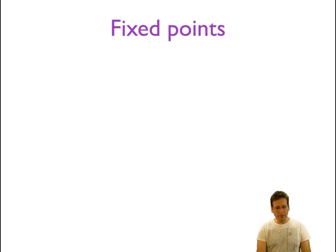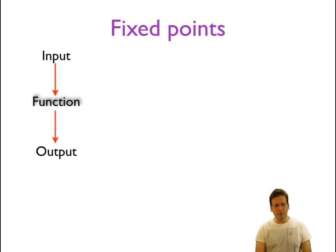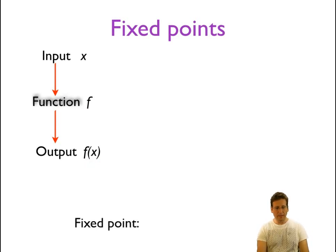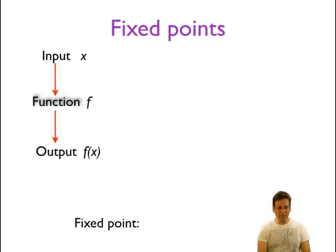There is a way to express this mathematically using the idea of a fixed point. A function takes an input and transforms it into an output — we describe the input as x, the function as f, and the output as f of x. One example is f of x equals x squared. A fixed point is an input x such that the function gives back the same value as output — in other words, an x star such that f of x star equals x star itself.